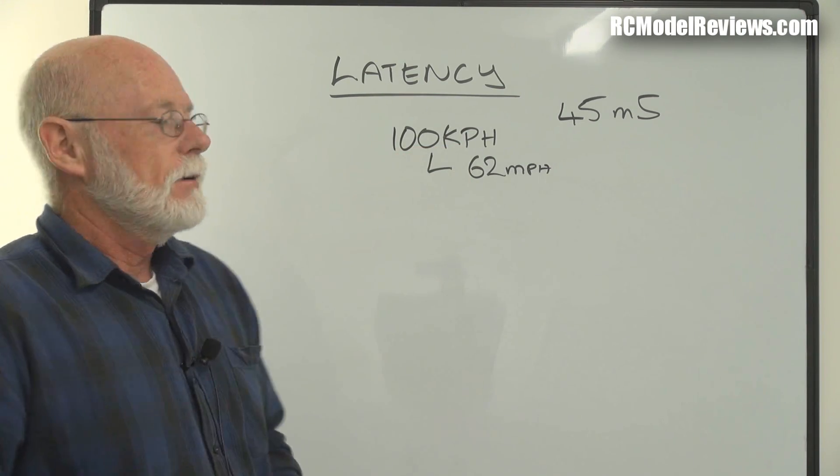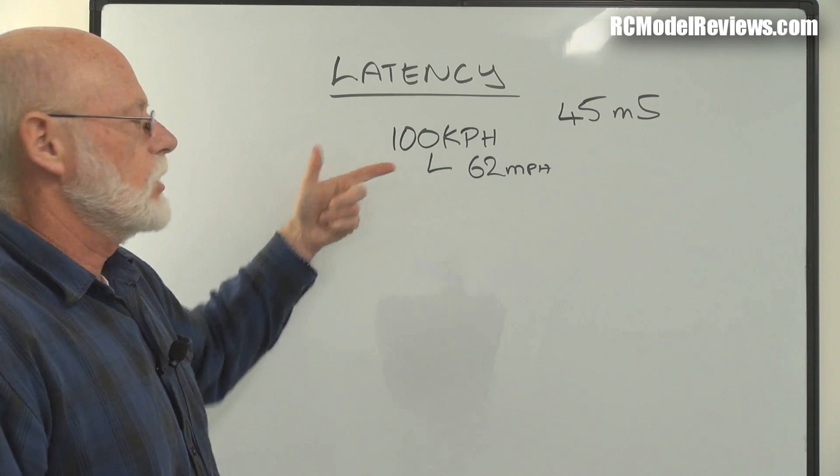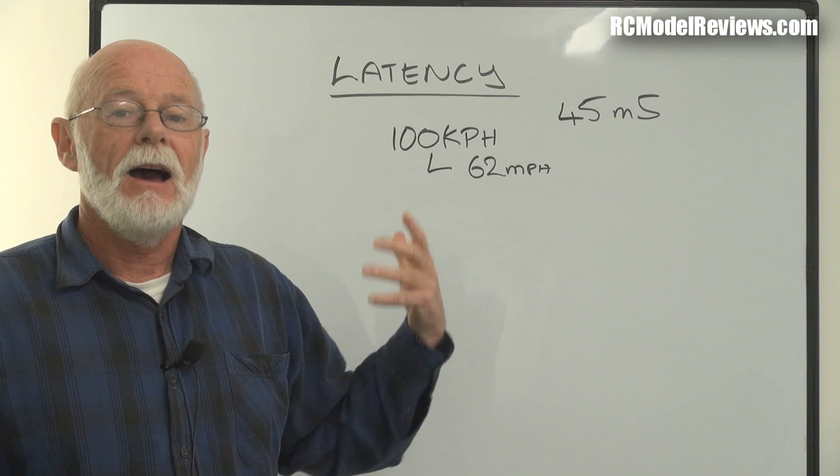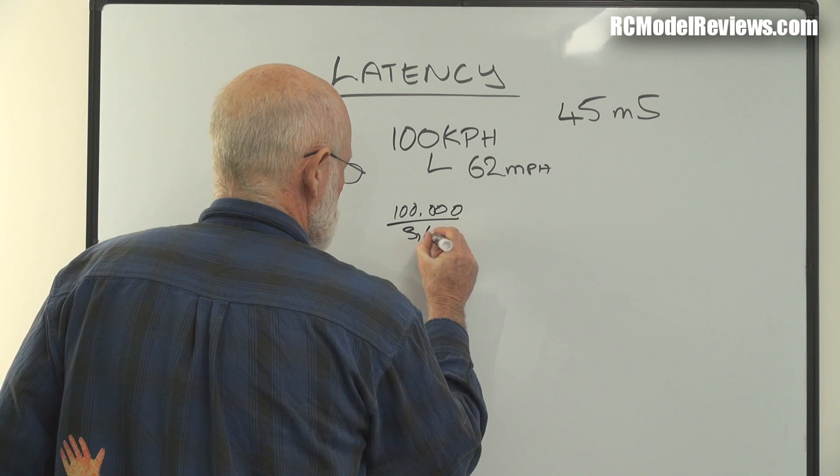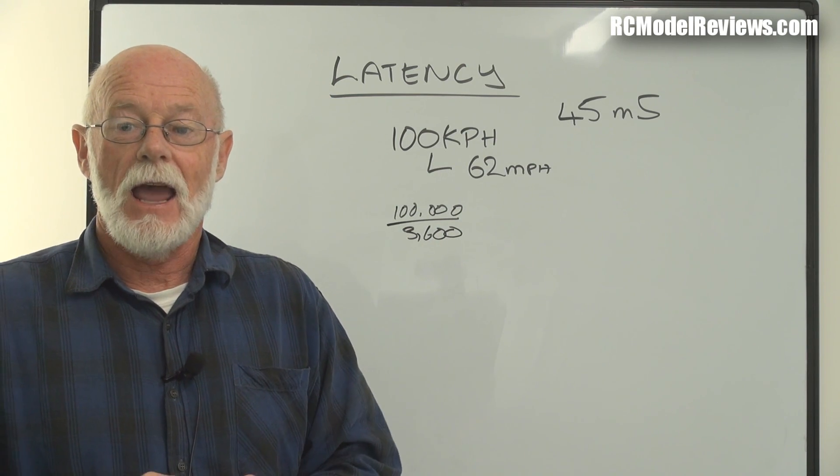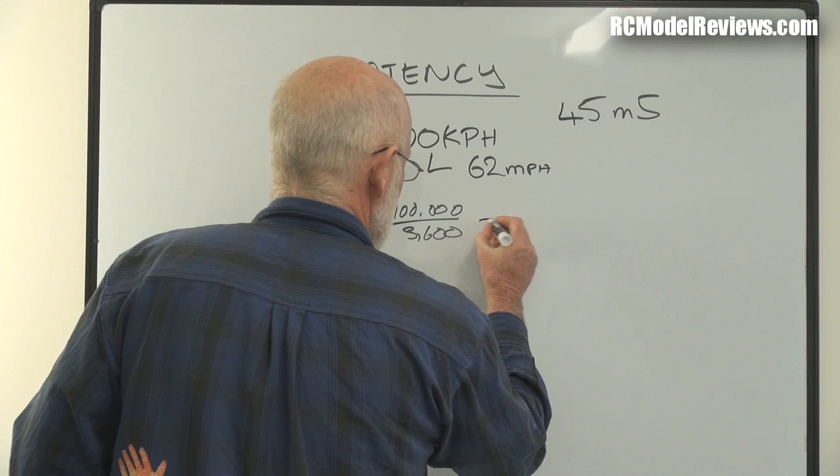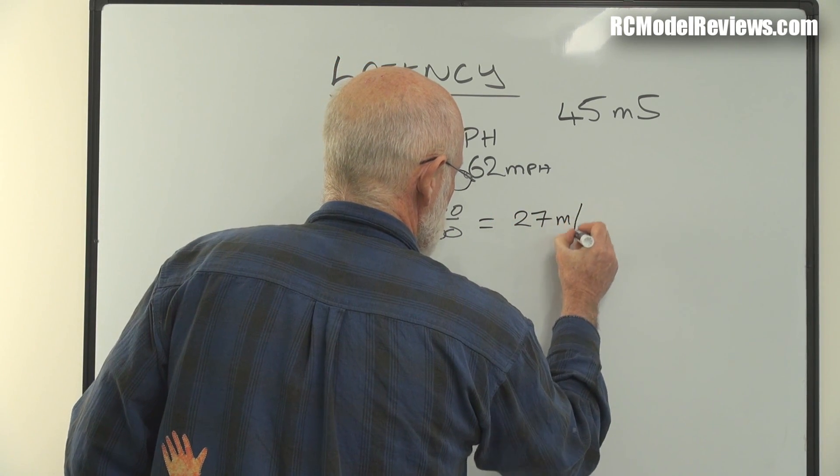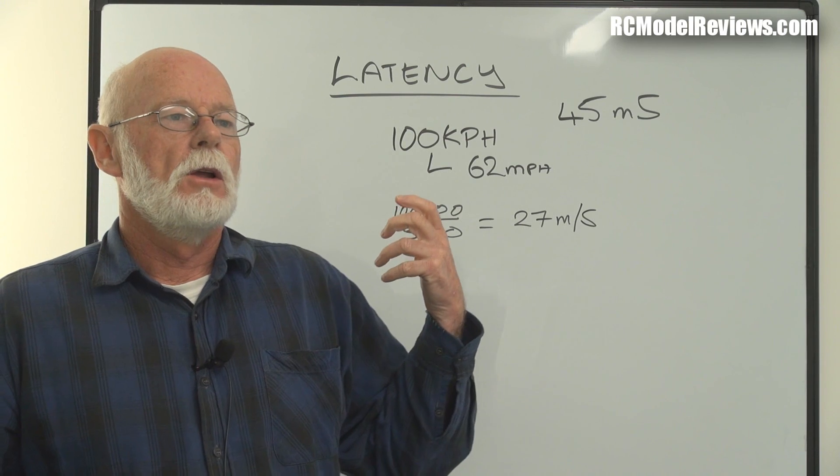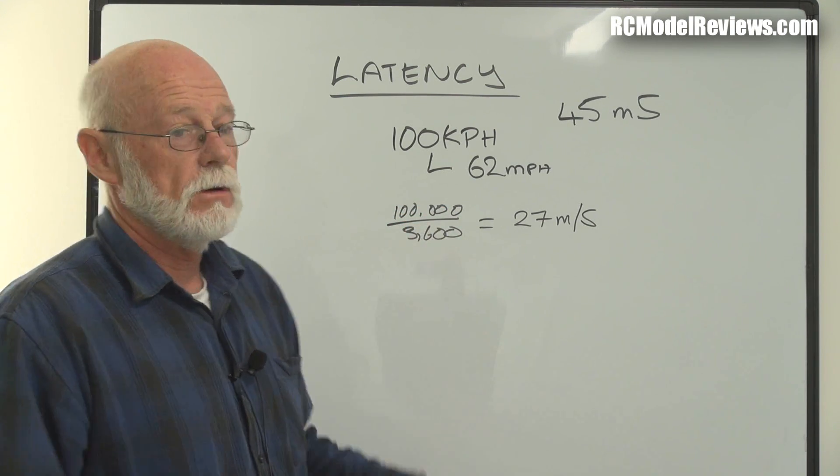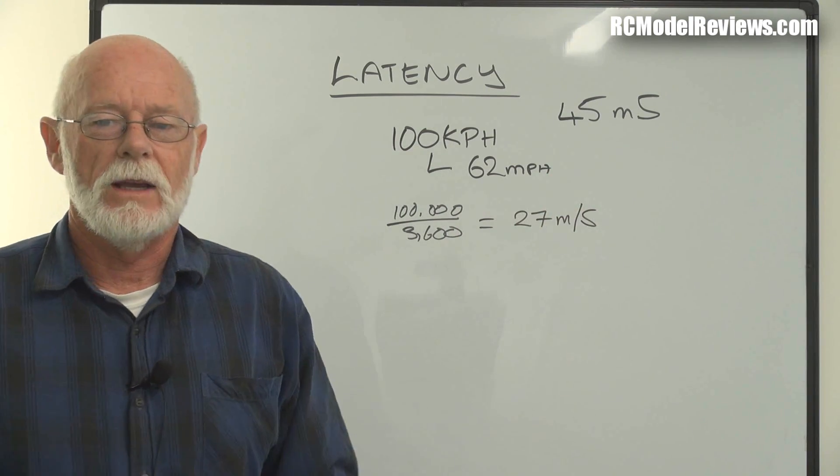That's pretty quick for a mini quad, but what is this latency going to mean? How far does a mini quad travel in a second at 100 kilometers an hour? To get the solution, you take 100,000 and divide it by 3,600, the number of seconds in an hour. The answer is 27 meters per second. That's quite a long way. It's about 30 yards, or 90 feet. You travel a long way in a second.